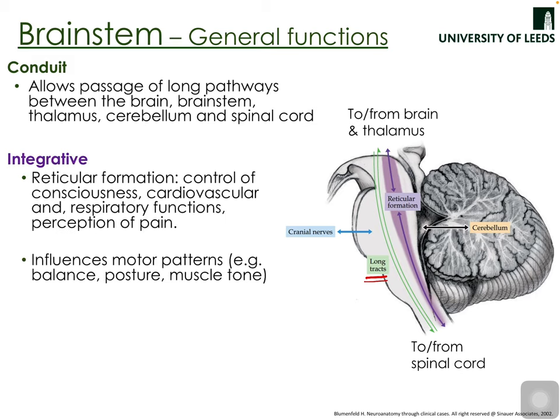The brainstem also has integrative functions. One key structure is the reticular formation — a diffuse network of neurons that is not very anatomically defined but has many functions, including control of consciousness and arousal. It also has nuclei that control respiratory and cardiovascular functions, and it exerts influence on how we perceive pain. This diffuse network spans the whole length of the brainstem.